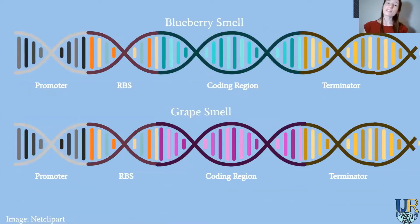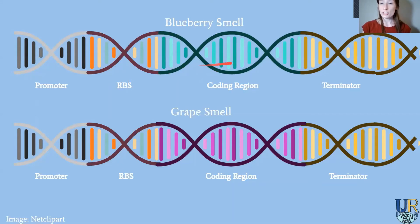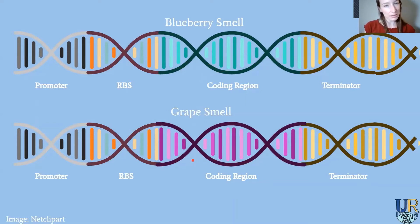Let's revisit our blueberry smell and grape smell examples and call the DNA sequences by their biobrick names. We have the promoter, the ribosome binding sites, the coding region — which is different between the two sequences, with one giving the blueberry smell protein and the other giving the grape smell protein — and finally, the terminators.